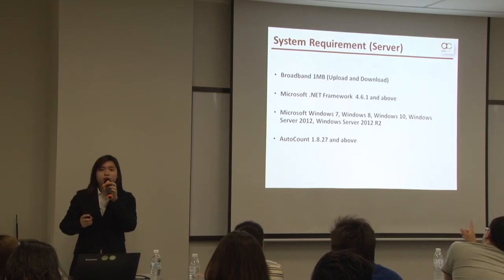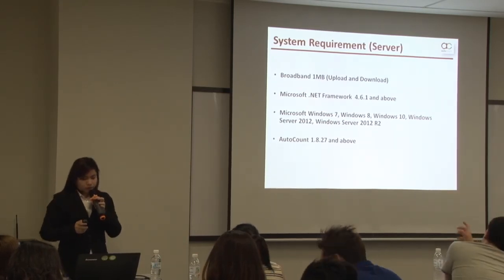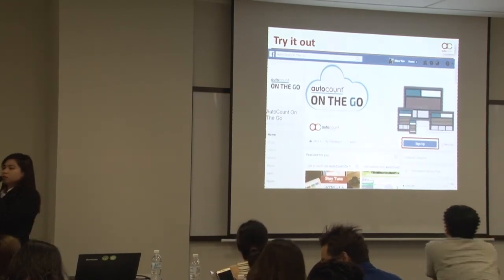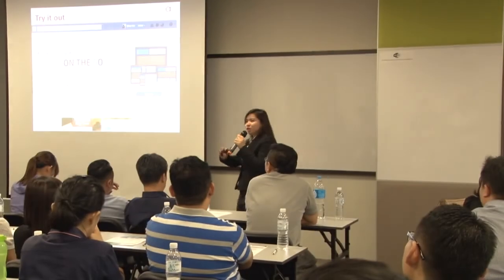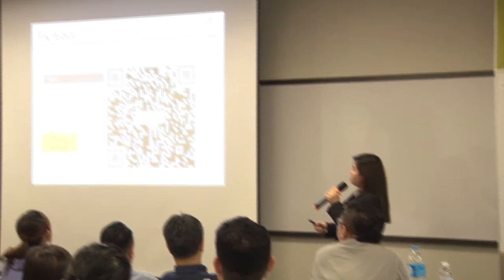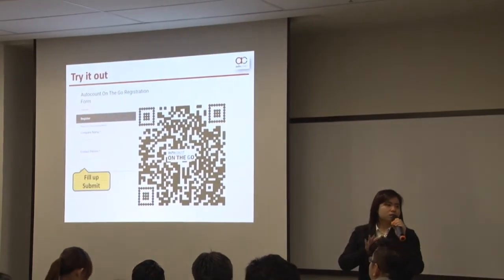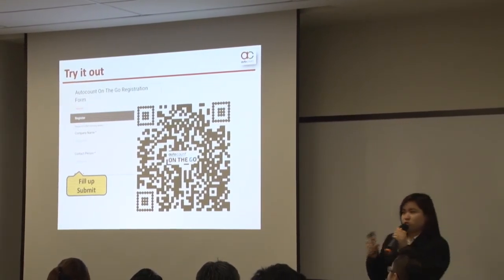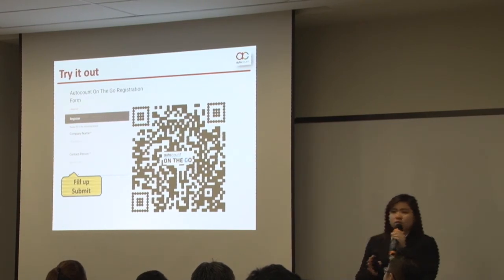If you are interested in AOTG, you can search for AutoCount On The Go on the Facebook page, then click on the sign-up button to get the registration form. Just fill in the simple information and submit the form. Our AOTG team will receive your registration and send you the activation code so you can test it.